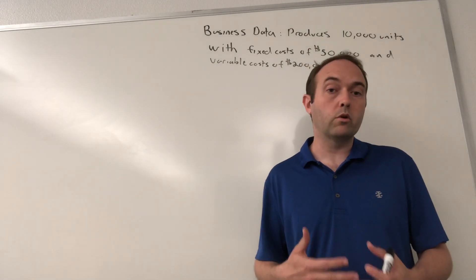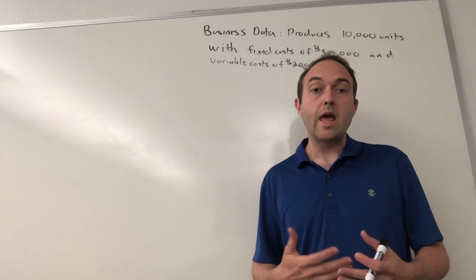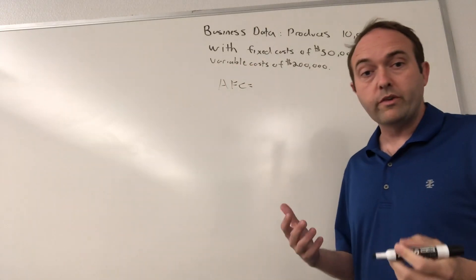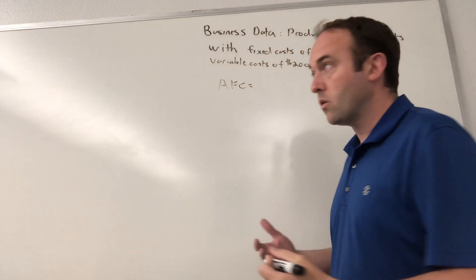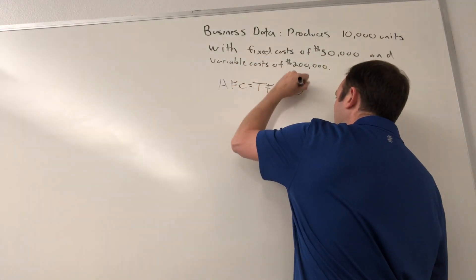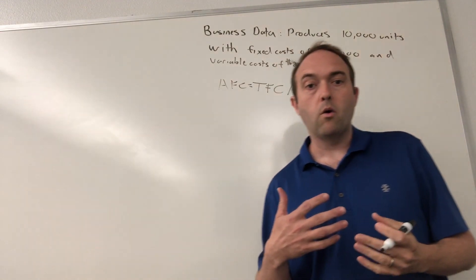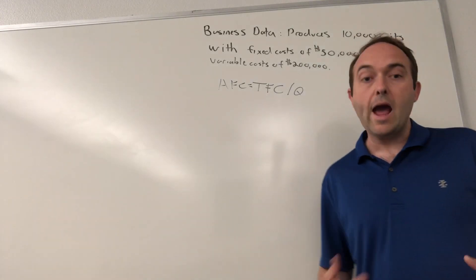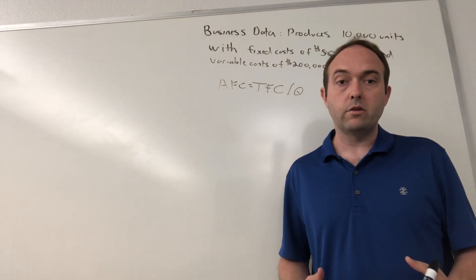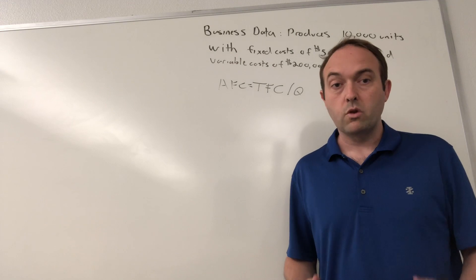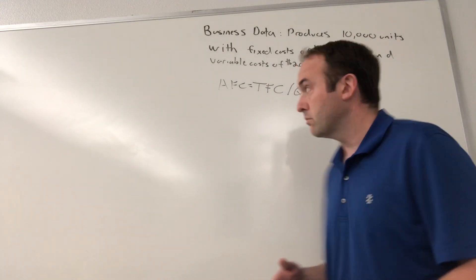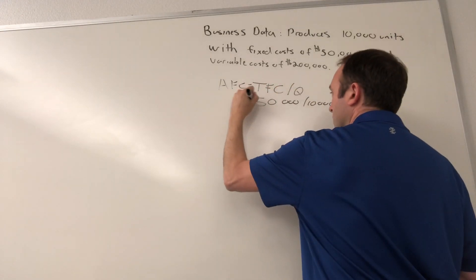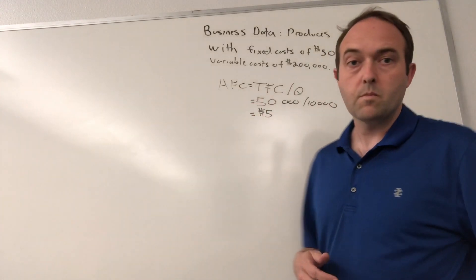The number one cost calculation we're going to look at is the average fixed cost, or AFC. Average fixed cost equals the total fixed cost, TFC, divided by the quantity. So in our example, if our fixed costs are $50,000 and our quantity is 10,000 units produced, the average fixed cost is that $50,000 divided by 10,000 units, which gives us a value of $5.